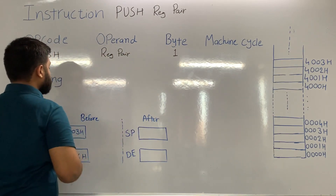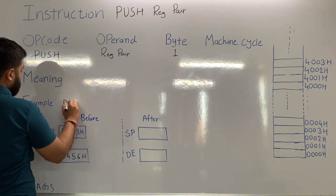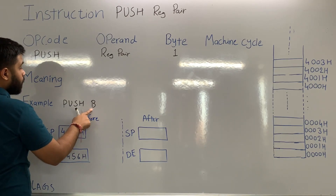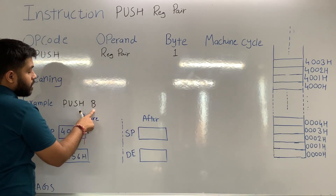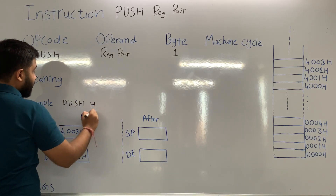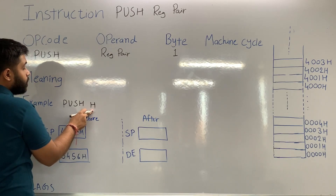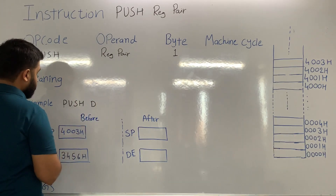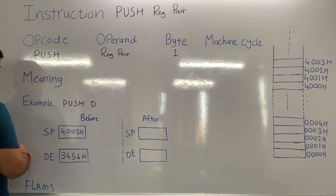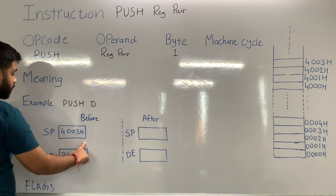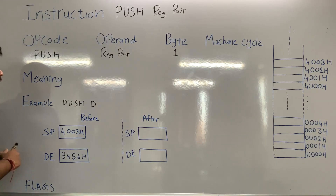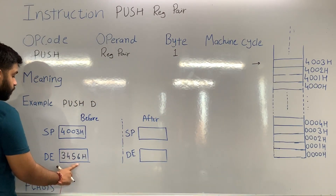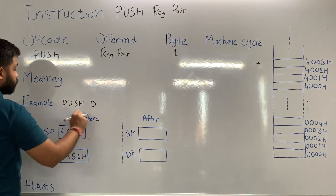Let's see one example. The example is PUSH B — when this instruction is executed, the content of the BC pair will be stored in the stack. You can also write PUSH H, which means the content of the HL pair will be stored in the stack, or PUSH D, which means the content of the DE pair will be stored in the stack. Suppose before execution, the content of the stack pointer is 4003H and the content of the DE pair is 3456H, and the instruction being executed is PUSH D.